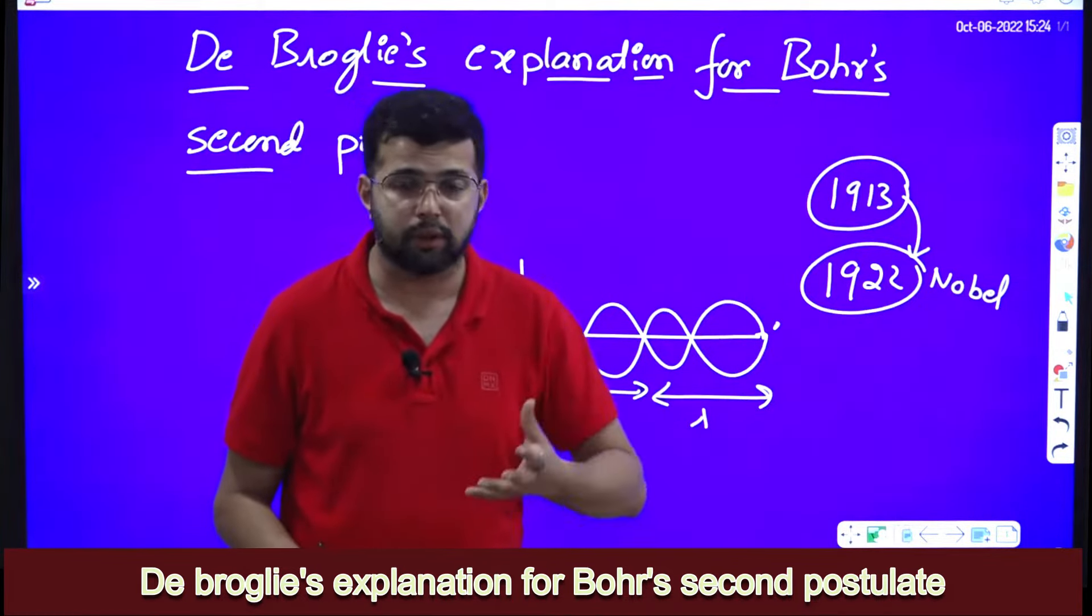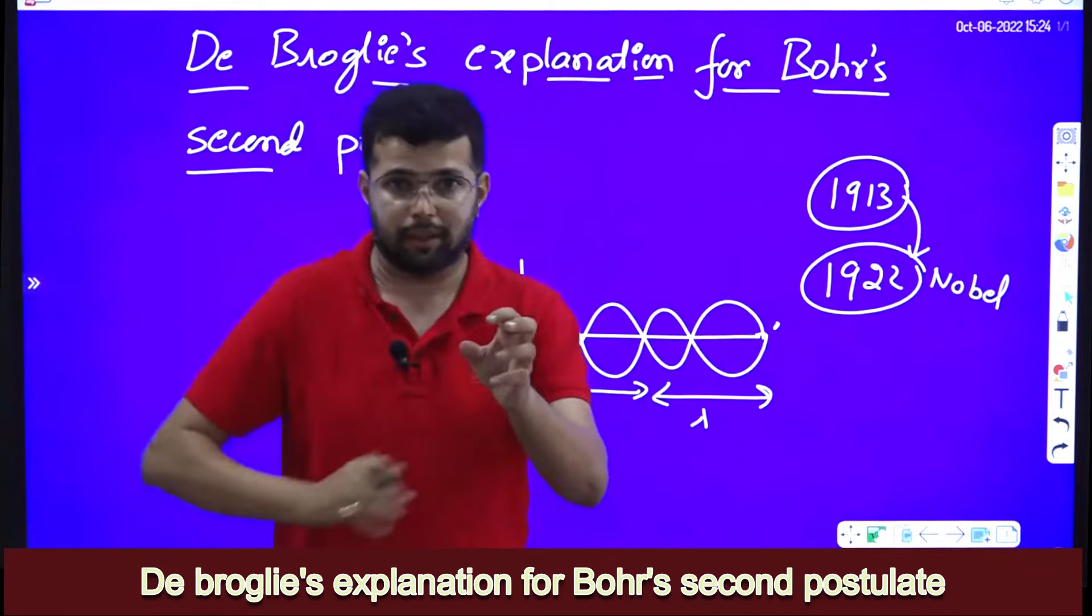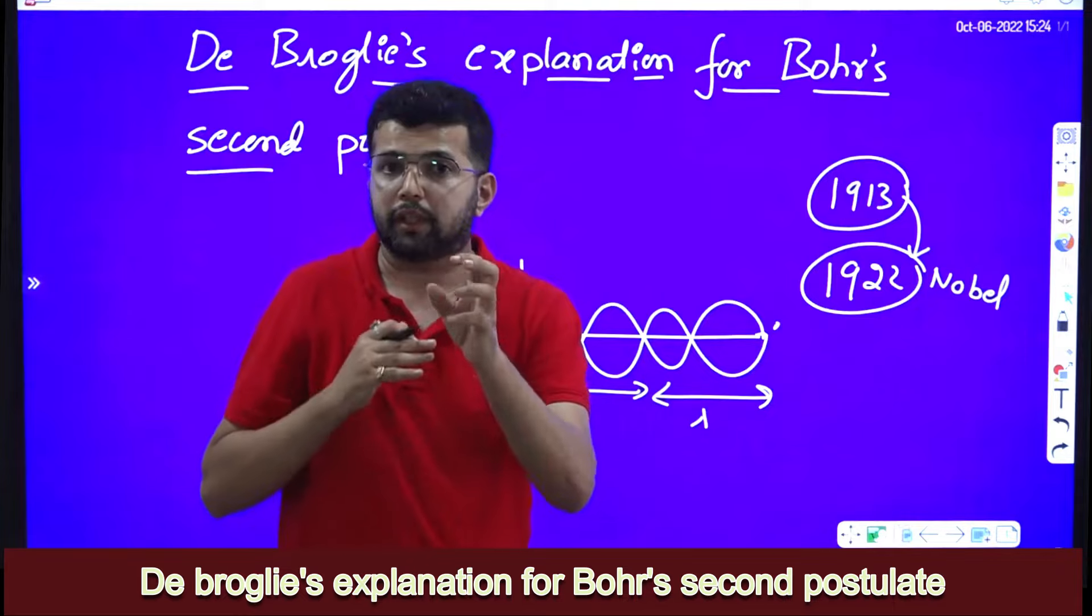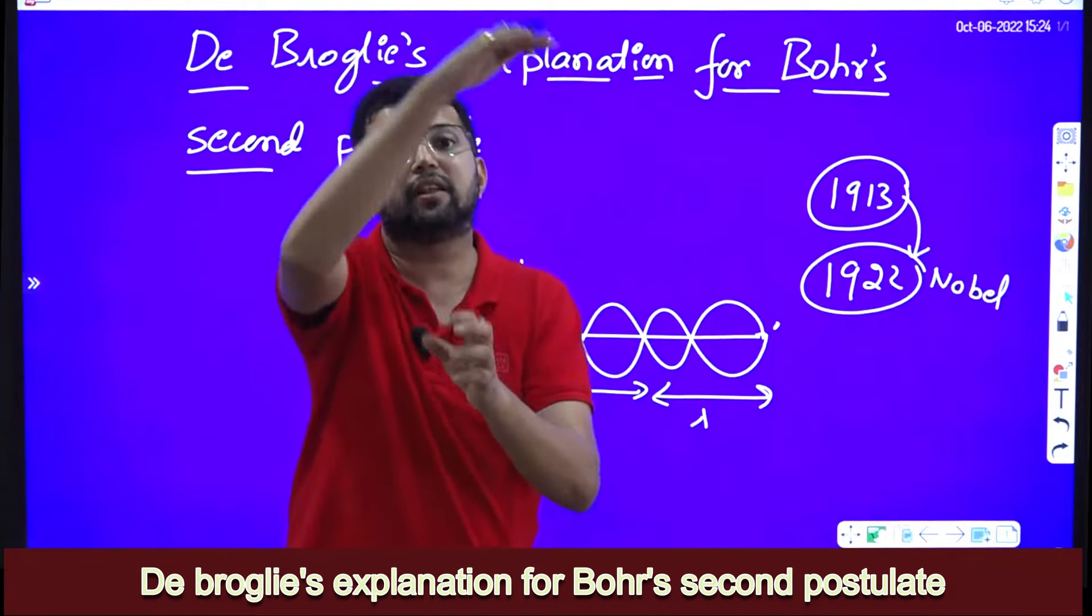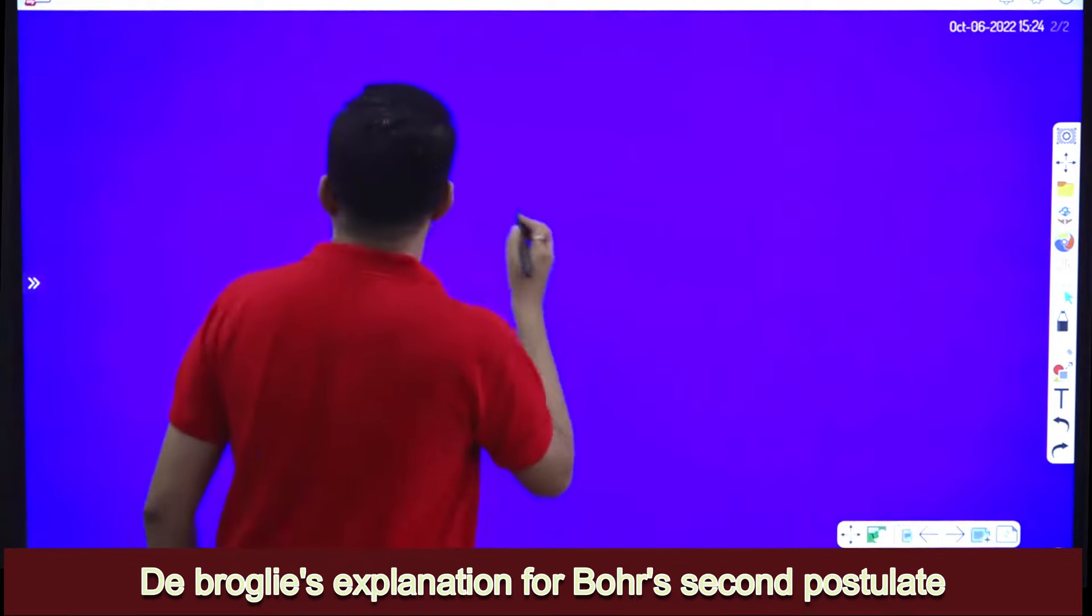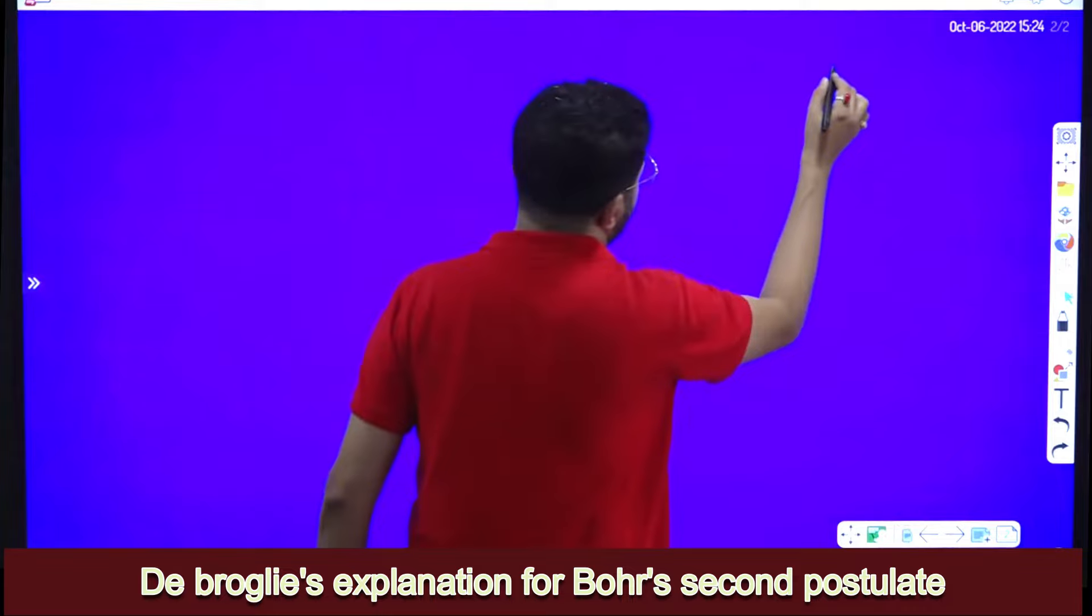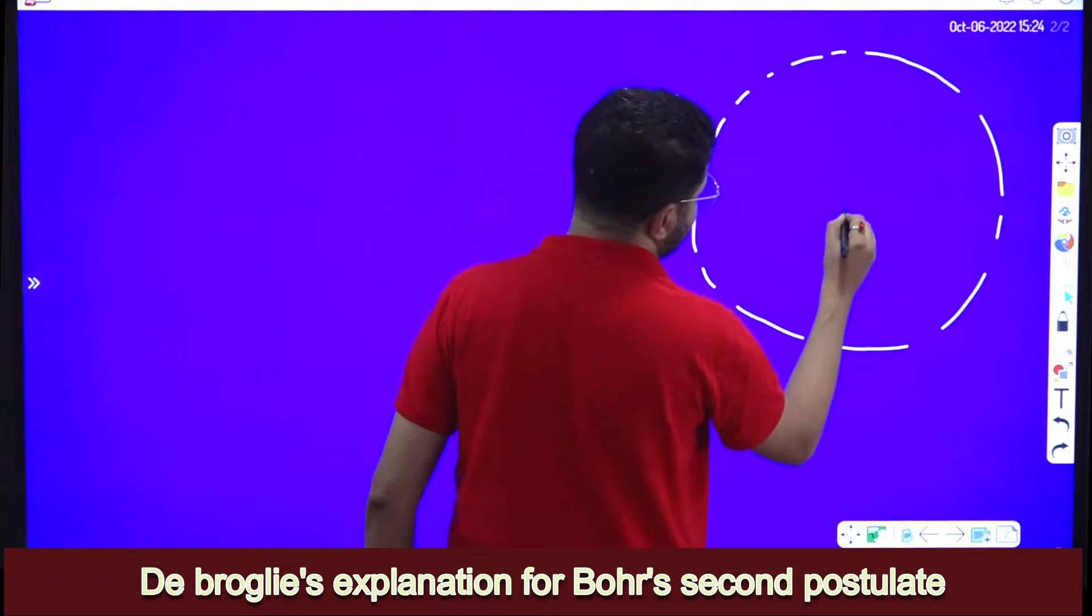What Louis de Broglie told is electron does not revolve around the atom as a particle, it revolves around the atom as a wave forming a stationary wave pattern. So what is the general understanding? General understanding is electron revolves around the nucleus like this in a circular orbit. This is the nucleus, charge of the nucleus is Z e.